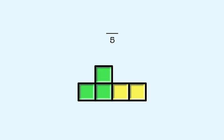The parts are each of the blocks. Two of the blocks are yellow, so the numerator is two. So two-fifths of the blocks are yellow.